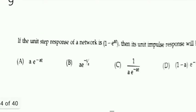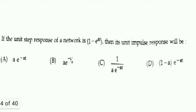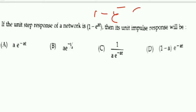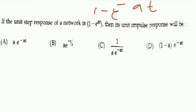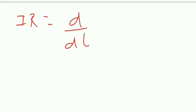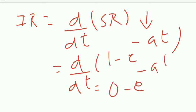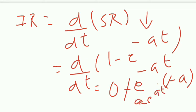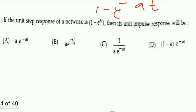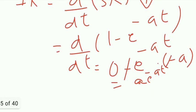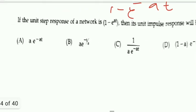Next question: the unit step response of a network is 1 − e^(−at). What is the impulse response? The impulse response is the differentiation of the step response. Differentiating: d/dt [1 − e^(−at)] = 0 − e^(−at)·(−a) = a·e^(−at). So the answer, option A, is a·e^(−at).